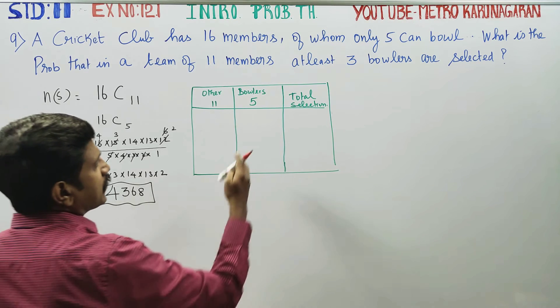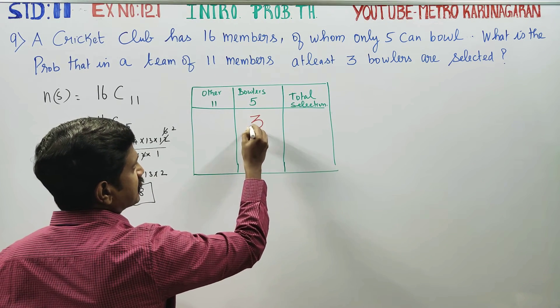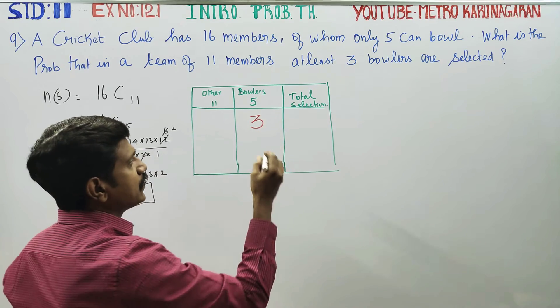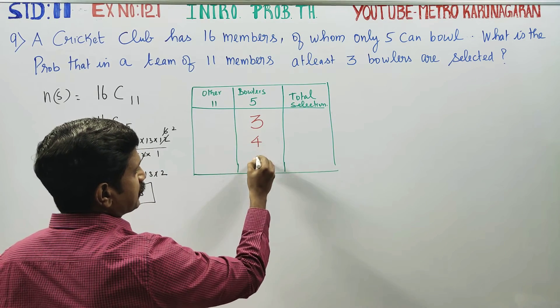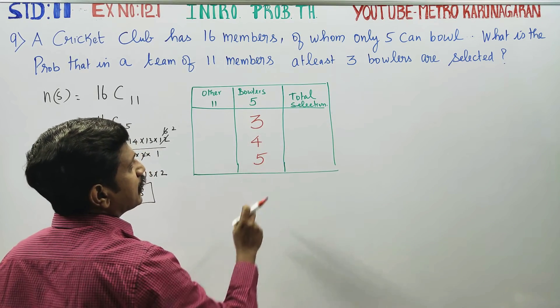These are only 5 bowlers. And you must select at least 3. At least 3 means 3, 4, to 5.